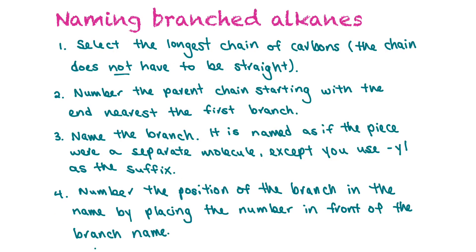Naming branched alkanes adds a bit more of a challenge. You have to find which chain of carbons is the longest — and the chain doesn't have to be straight, so look at all the different branches. You number the parent chain starting with the end nearest the first branch. Then you name the branch as if it were a separate molecule, except you use 'yl' as the suffix instead of 'ane', and you number the position of the branch in the name.